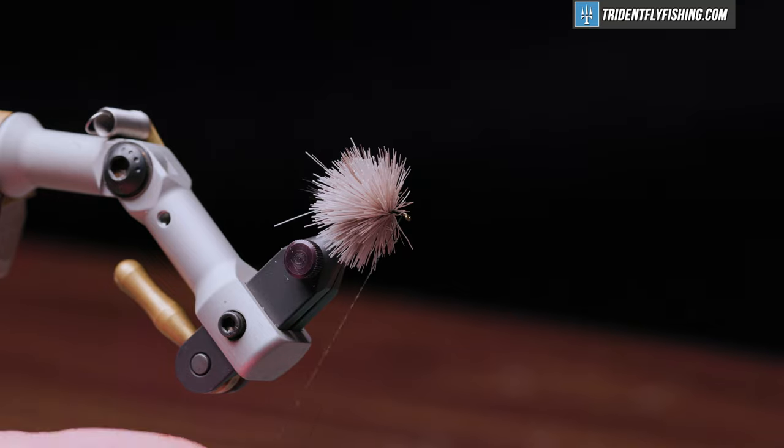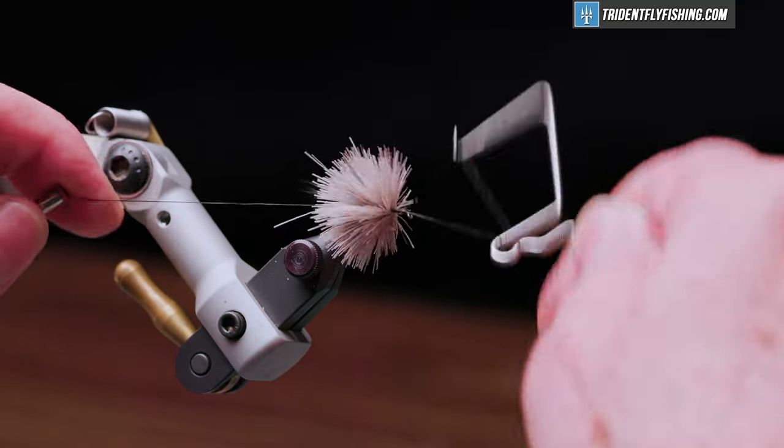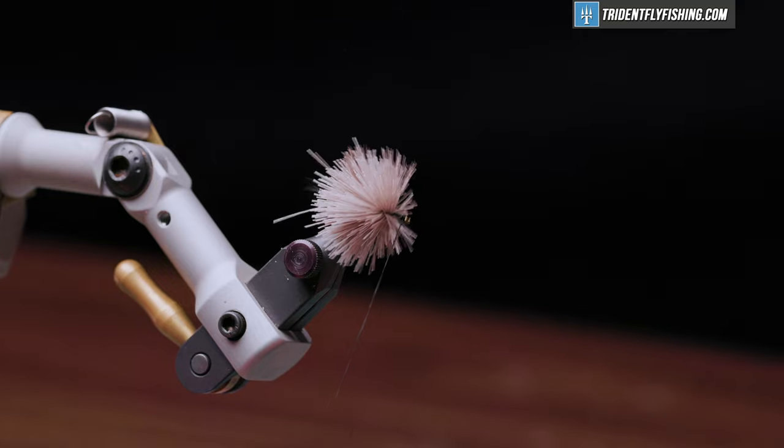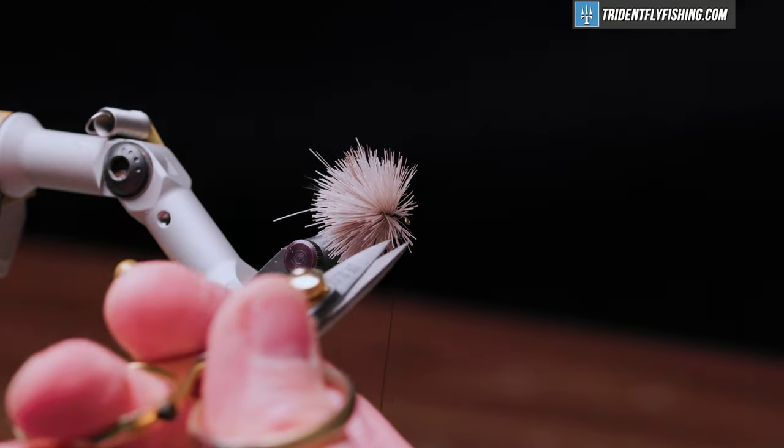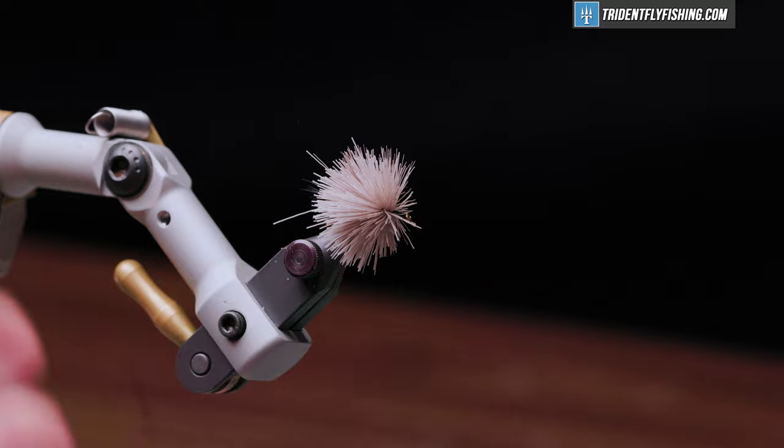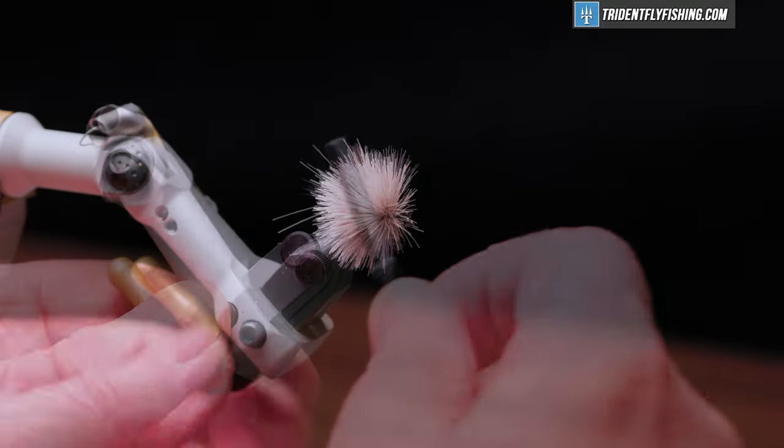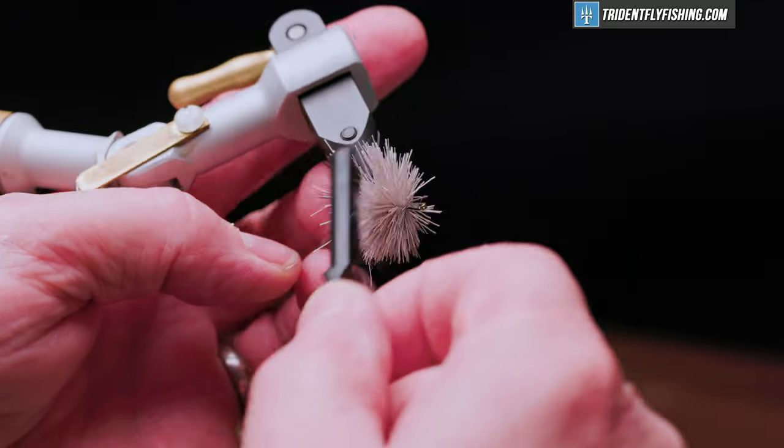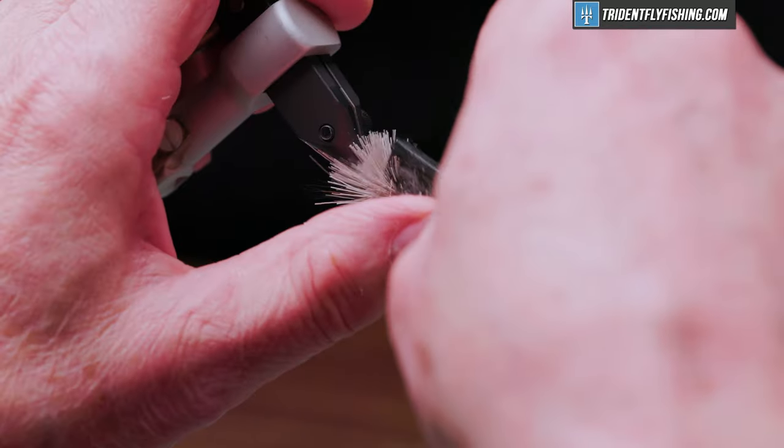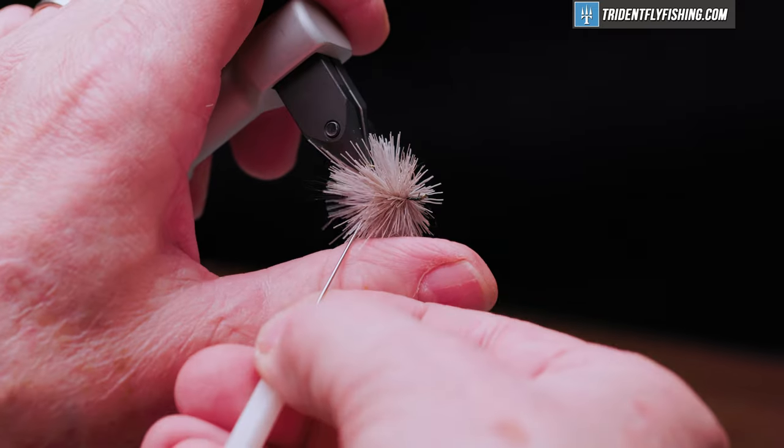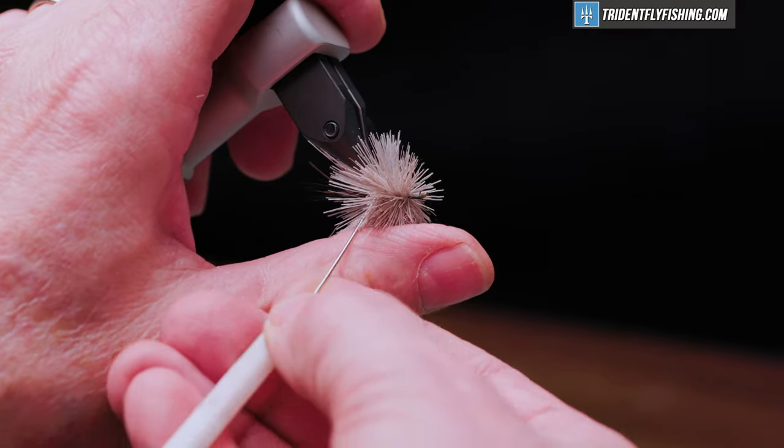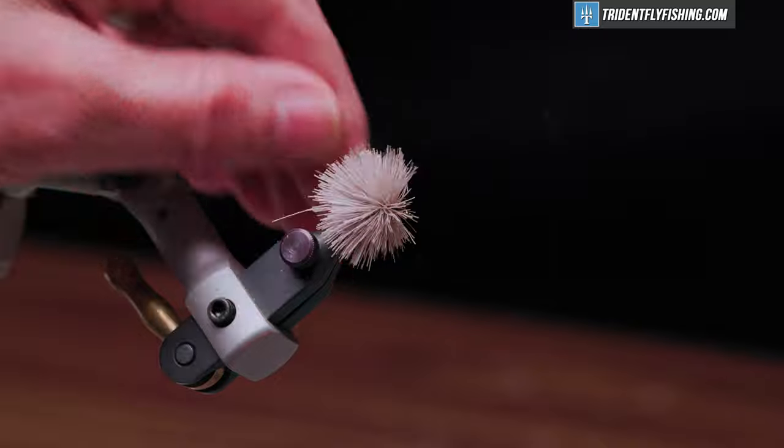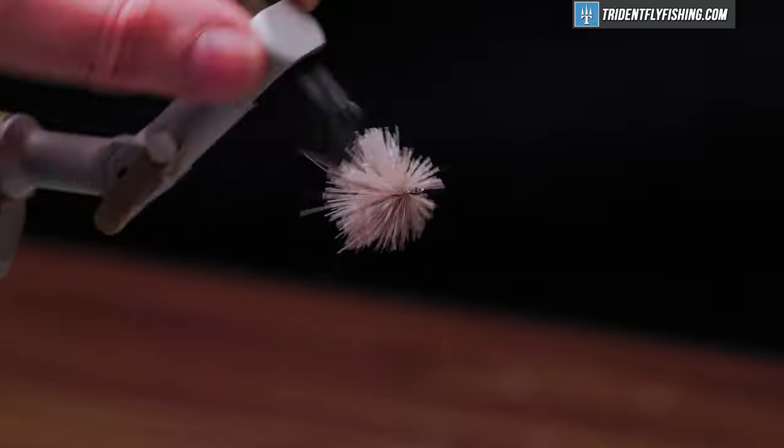Take a couple turn whip finish here to tie that off. I'm going to cut our thread and work on shaping the body next. So we're just going to go through this, make sure we don't have any stuck material. You can see a couple there. There we go. All right.